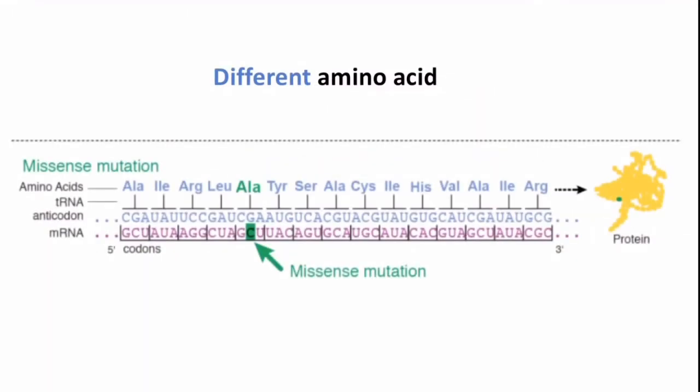In another case, the sequence of the codon has changed due to point mutation. In this case, the codon is coding for a different amino acid. This is known as missense mutation.